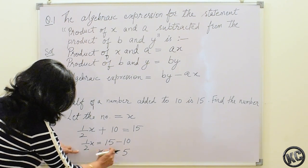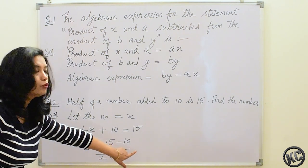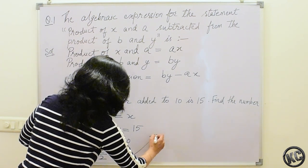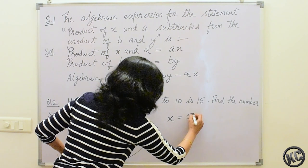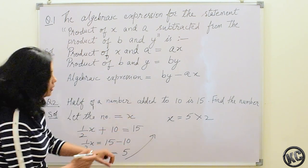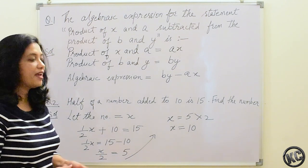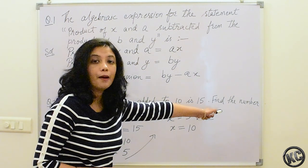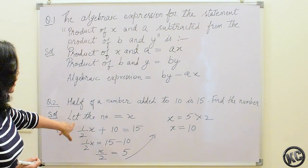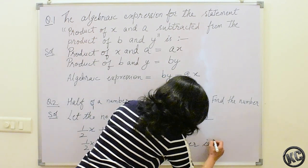15 minus 10 gives us 5. Now 2 is in division with x, so when we shift it to the other side it becomes multiplication. Therefore x is equal to 5 multiplied by 2, which gives x equal to 10. So the value of x is 10 — we have found our number. The number is 10.